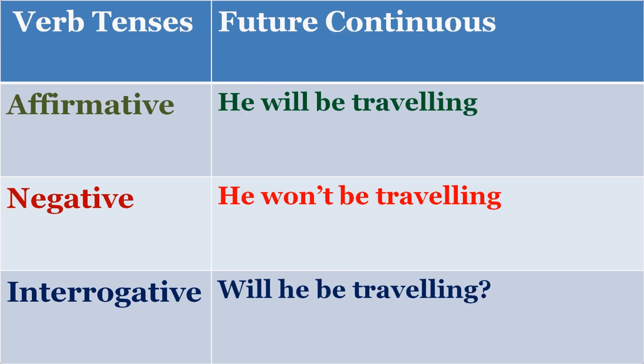Same thing for future continuous — 'will be.' Affirmative: 'He will be traveling' or 'She will be reading.' Negative: 'He won't be traveling' or 'She won't be going there.' Interrogative: 'Will he be going?' or 'Will he be traveling?' Just try to understand the context and then practice these sentences.